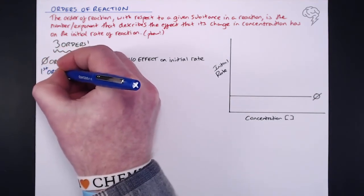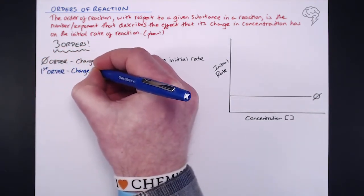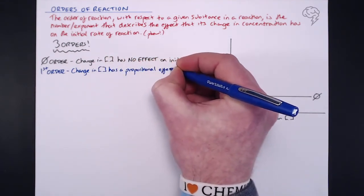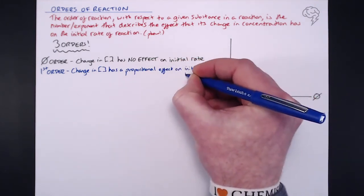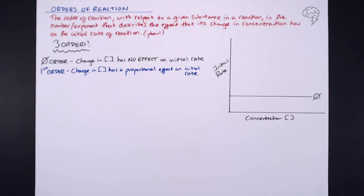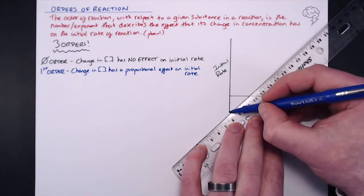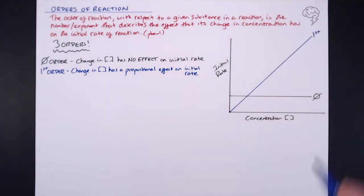Next up, we've got first order. First order basically means that a change in concentration of a reactant has a proportional effect on the initial rate. If you double the concentration of this reactant, then the initial rate is going to double. If you triple the concentration, the initial rate is also going to triple. So in terms of a graph, it's a straight line relationship — a directly proportional relationship.